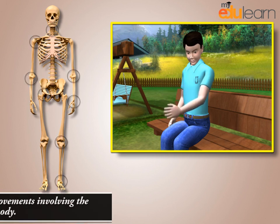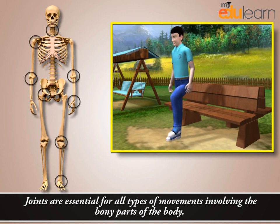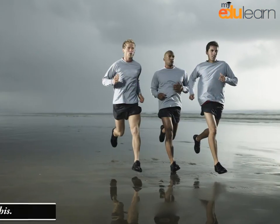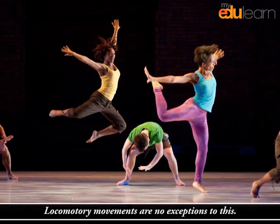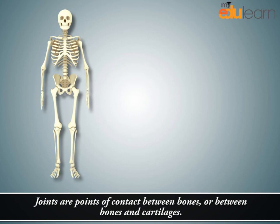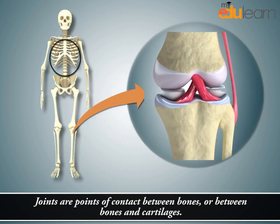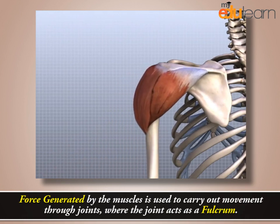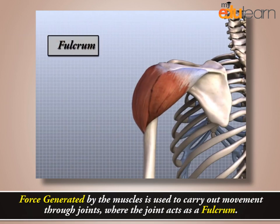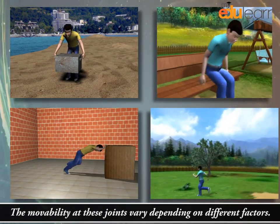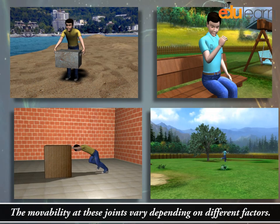Joints are essential for all types of movements involving the bony parts of the body. Locomotory movements are no exceptions to this. Joints are points of contact between bones or between bones and cartilages. Force generated by the muscle is used to carry out movement through joints where the joint acts as a fulcrum. The movability of these joints varies depending on different factors.